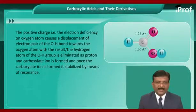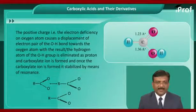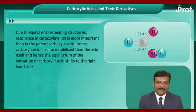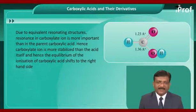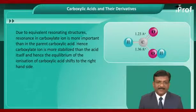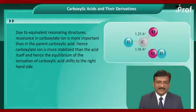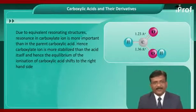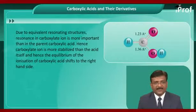And once the carboxylate ion is formed, it is stabilized by means of resonance. Due to equivalent resonating structures, resonance in the carboxylate ion is more important than in the parent carboxylic acid. Hence, the carboxylate ion is more stabilized than the acid itself, and the equilibrium of the ionization of the carboxylic acid shifts to the right-hand side.